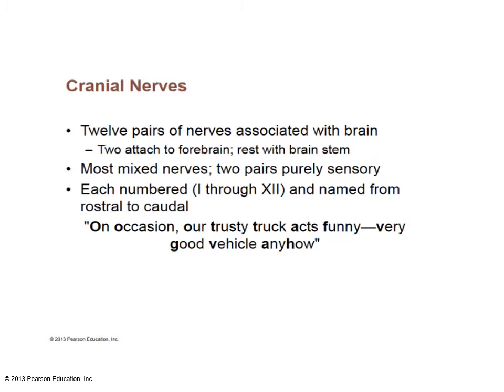Most cranial nerves are mixed, having both motor and sensory function, but three pairs are purely sensory. They are numbered one through twelve and named from rostral to caudal. Here's a mnemonic sentence where the first letter of each word gives you the cranial nerves in order: 'On occasion our trusted truck acts funny, very good vehicle anyhow.'